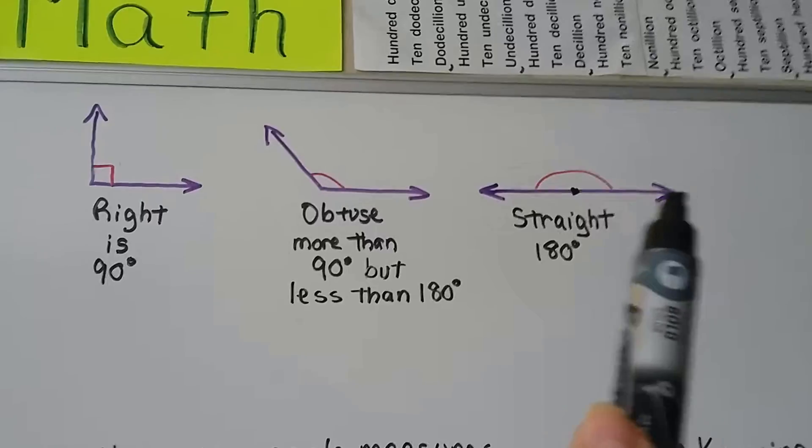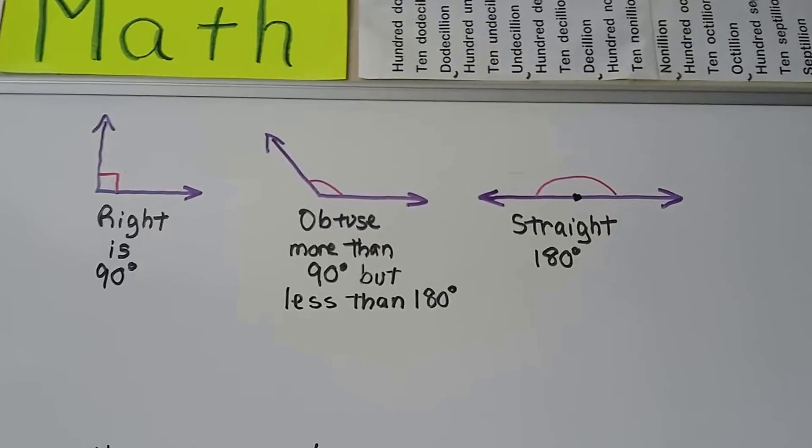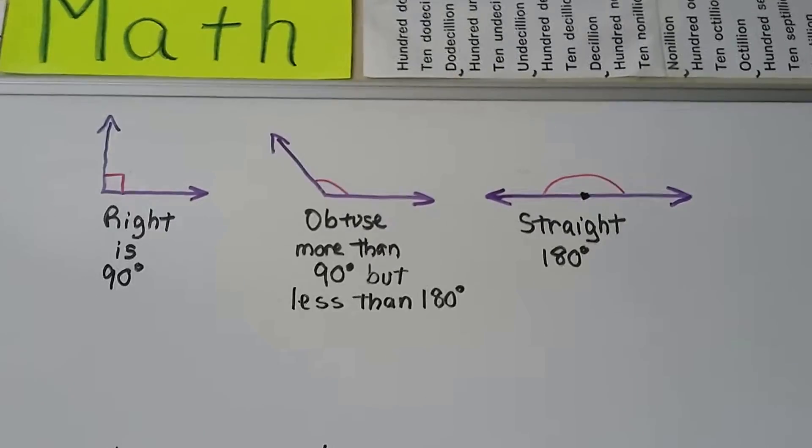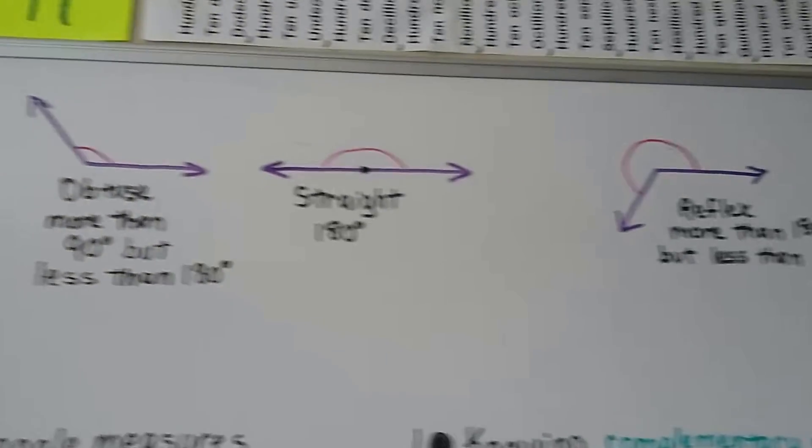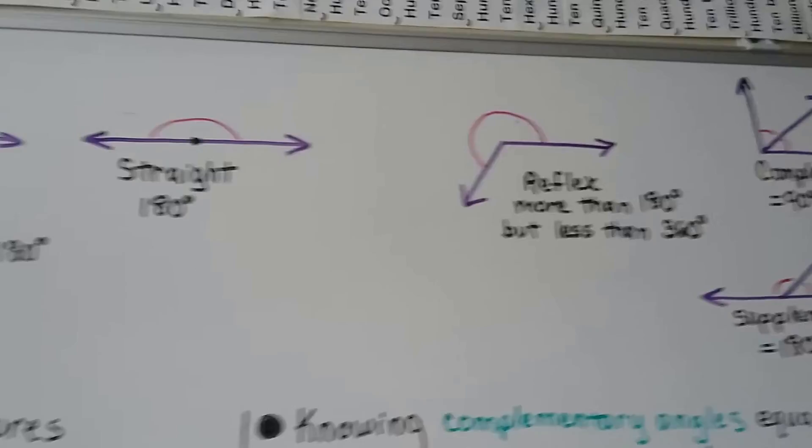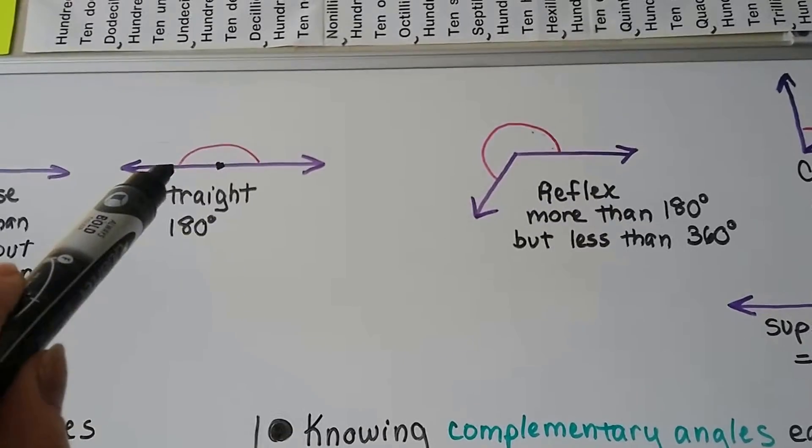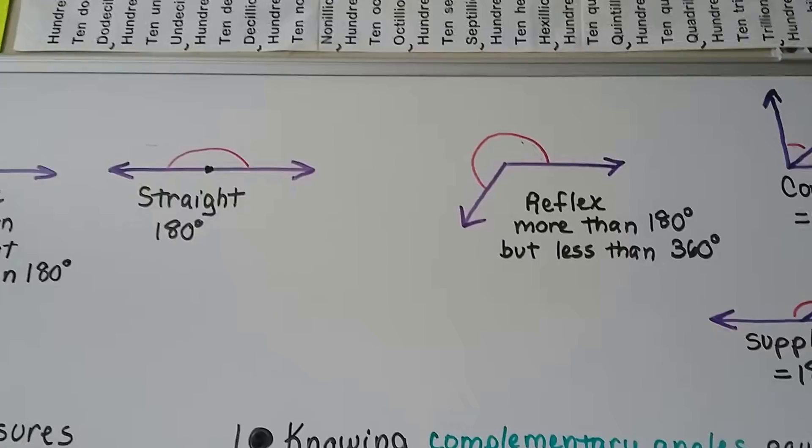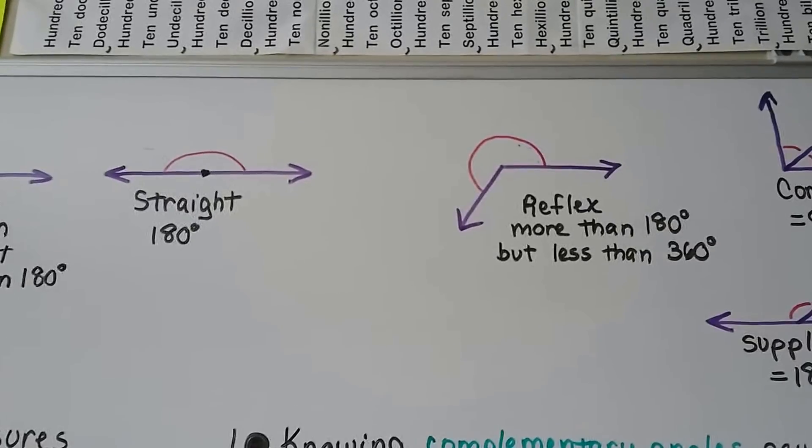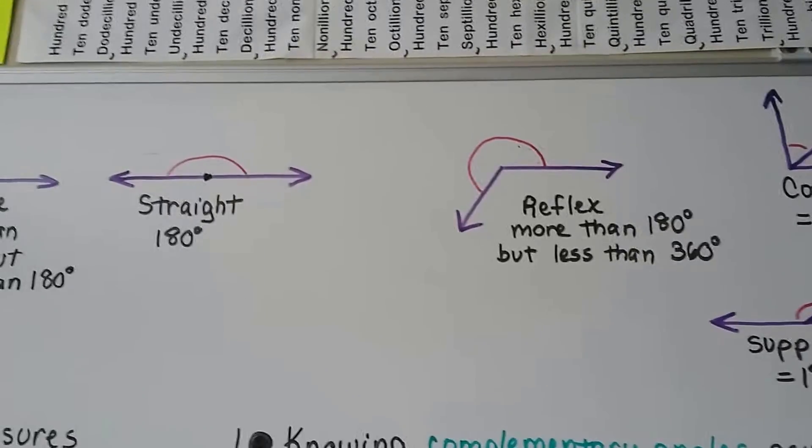A straight angle means it measures 180 degrees. So a straight line is a 180 degree angle. Then we have angles that got so big that they went past the straight one and kept going. They're called reflex angles. They're more than 180 degrees but less than 360 degrees.